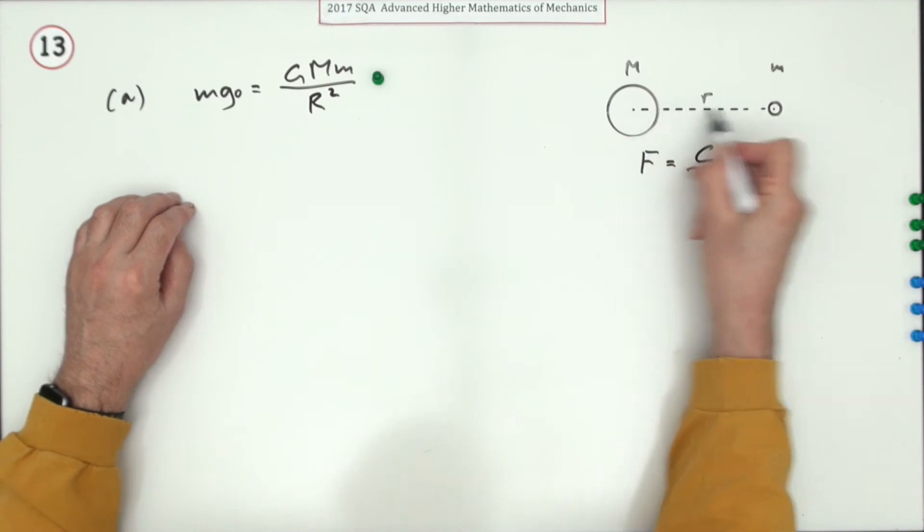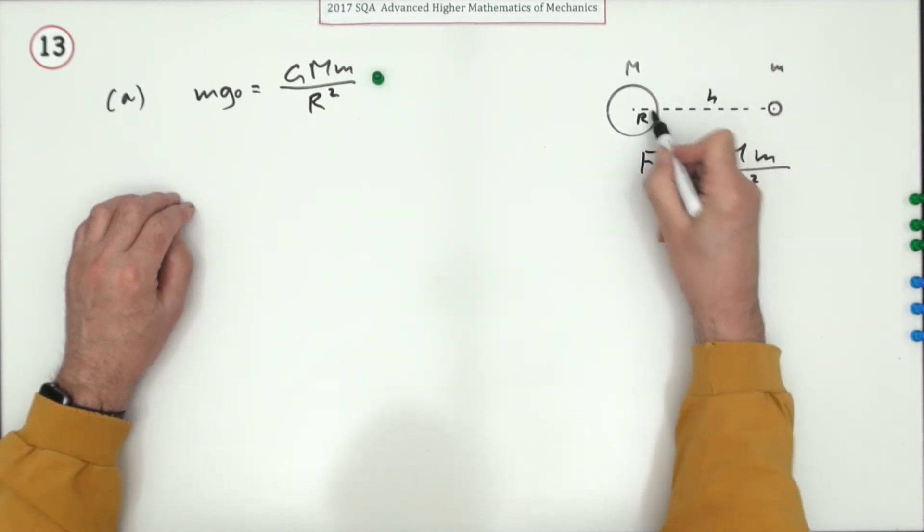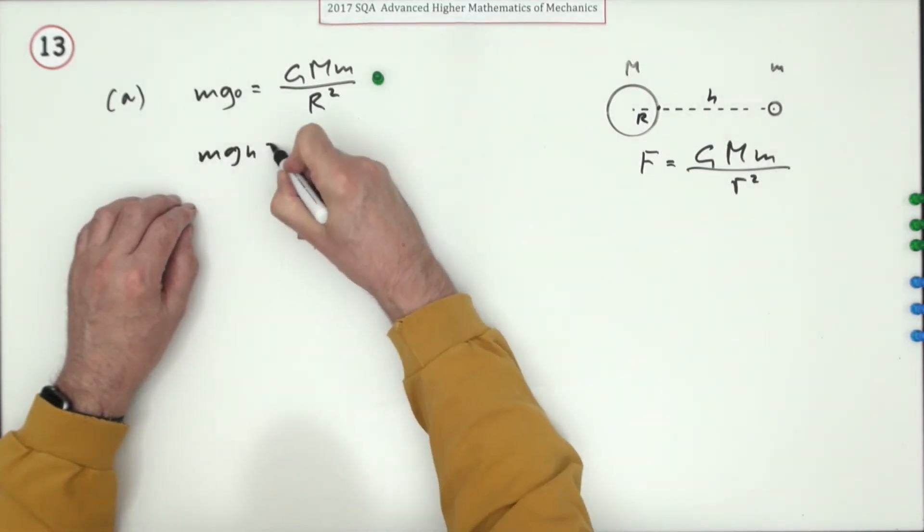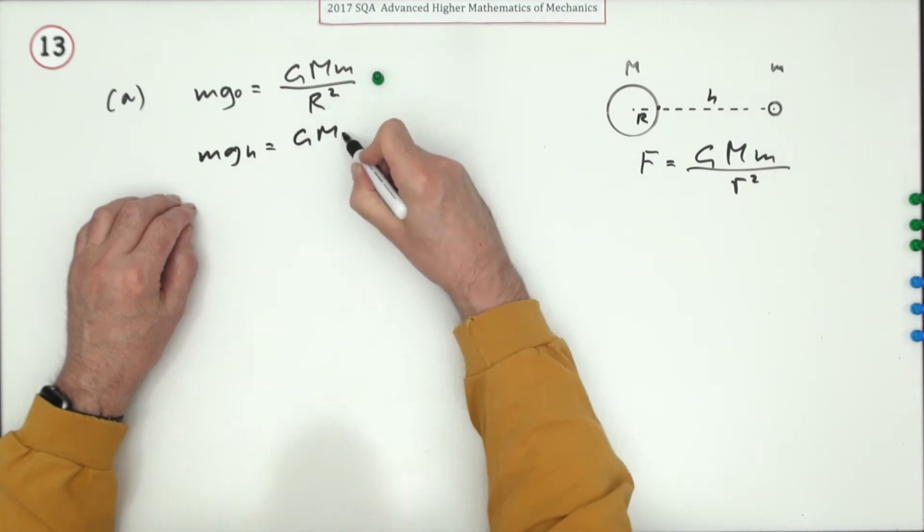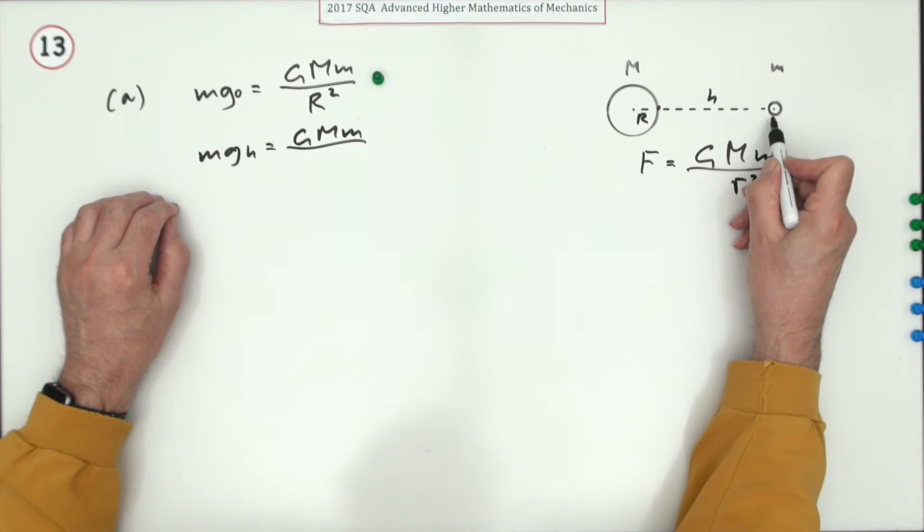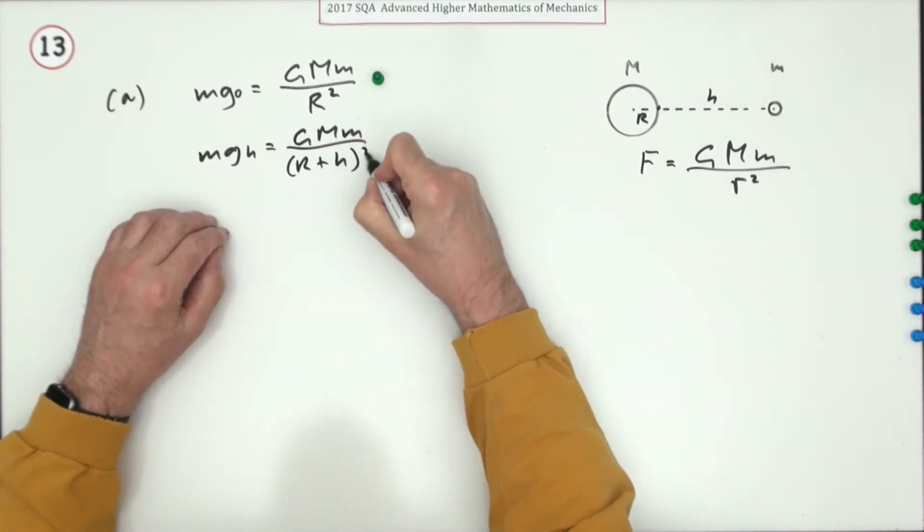Now what happens at a height of h? One of the two parts here is that's r and that's h above the surface. Well, mg at h will be exactly the same thing, product of masses over, but this time the distance between their centers will be (r+h) squared.